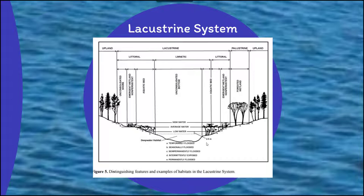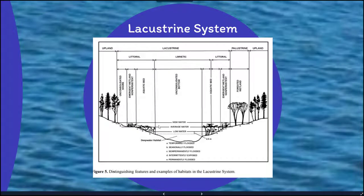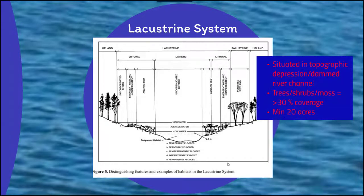For the lacustrine system — as you can imagine with the lake — we can have different levels of water for different lakes, which can fluctuate either seasonally or temporarily. The lacustrine region tends to be surrounded on either side by the palustrine wetland type as well. It's situated in a depression or river channel to retain more water. Trees, shrubs, and moss are going to make up greater than 30% coverage. Lacustrine systems generally are a minimum of 20 acres in size or more.